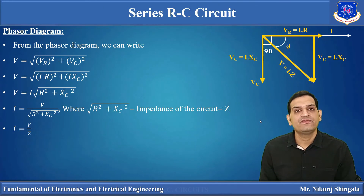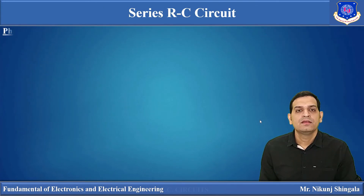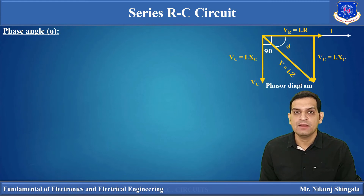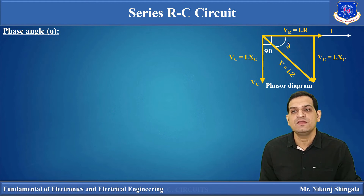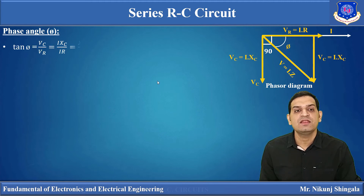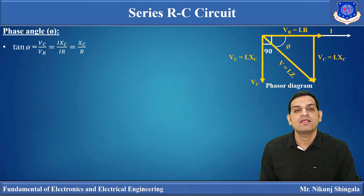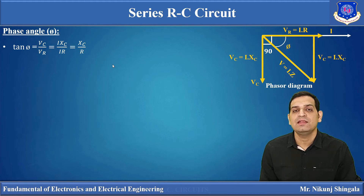Now let us find the expression for the phase angle φ. To determine φ we use the voltage triangle, where all sides are represented by voltages VR, VC, and V. From the voltage triangle: tan φ = VC / VR. Since VC = I×XC and VR = I×R, the I cancels out, giving tan φ = XC / R.